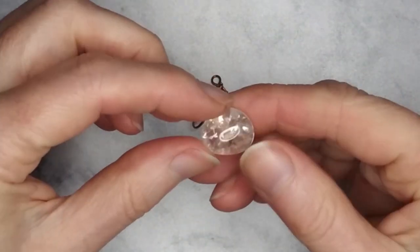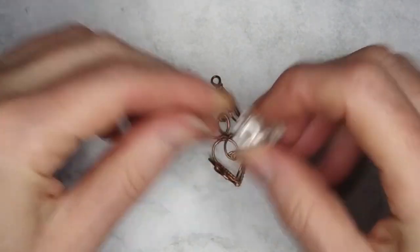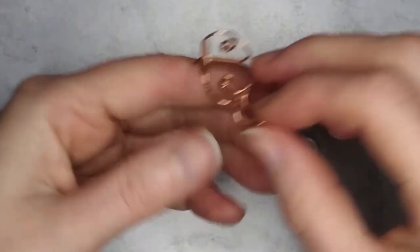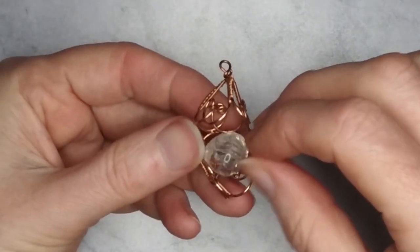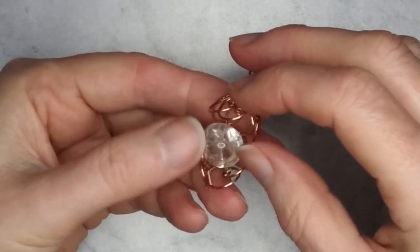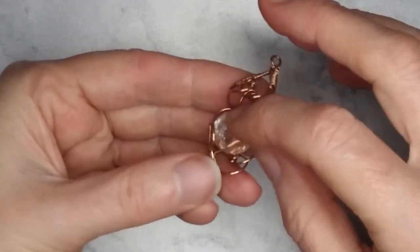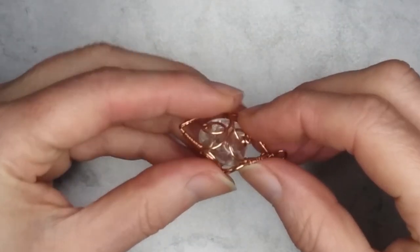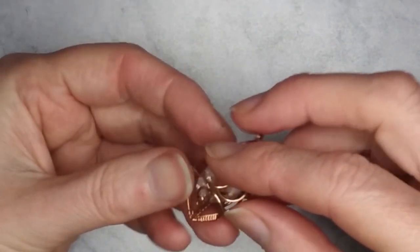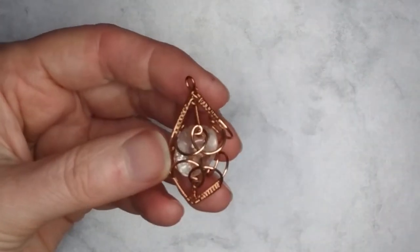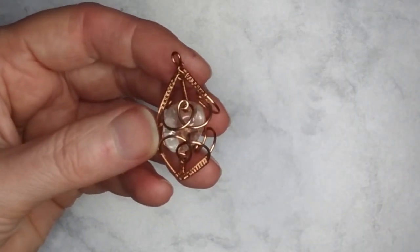I am going to use the pendant design to cage this small fire and ice quartz tumble stone. The pendant is completed exactly the same way as the sun catcher.